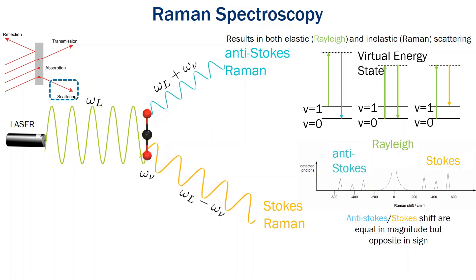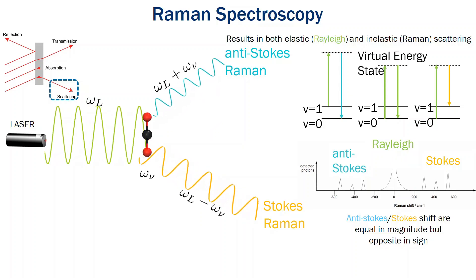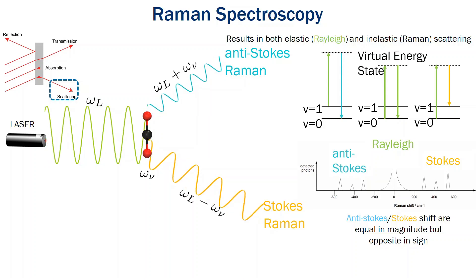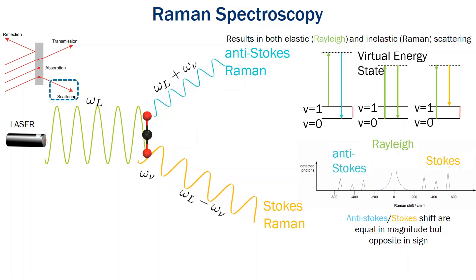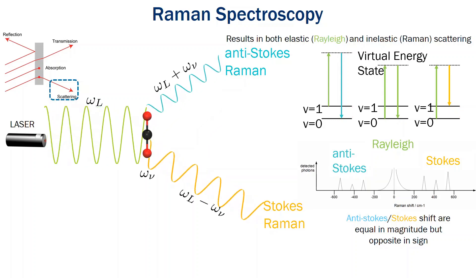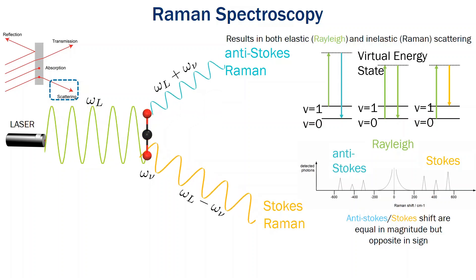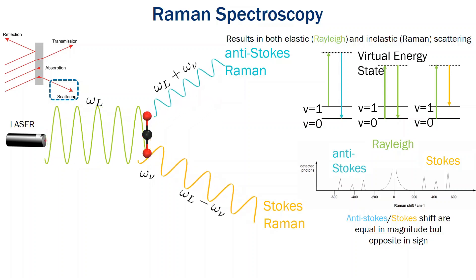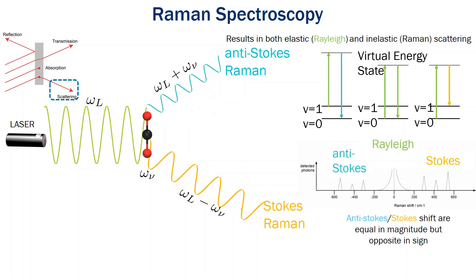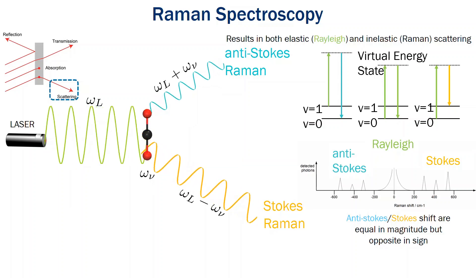What you'll notice is that the energy delta is the same for both anti-Stokes and Stokes — they're just opposite in sign. So the Raman spectra is always symmetric between the anti-Stokes and Stokes features.